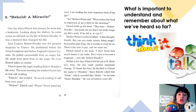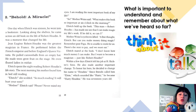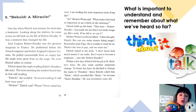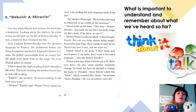Behold a Miracle, Chapter 2. One day when Enric was 16, he went into a bookstore and came across an old book on the life of Robert Houdin — it was a moment that changed his life. Jean Eugene Robert Houdin was the greatest magician in France. He performed before the French Emperor and England's Queen Victoria. He pulled cannonballs from an empty hat, made trees grow fruit on stage, and even floated ladies mid-air. Enric spent the night reading Robert Houdin's life story. The next morning his mother found him in bed still reading. 'Enric,' she scolded, 'so much reading — it will hurt your eyes.' 'Mother,' Enric said, 'never mind my eyes. I am reading the most important book of my life.'